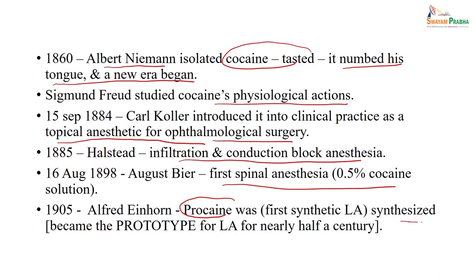Procaine was the first synthetic local anesthetic, prepared for the first time in 1905 by Alfred Einhorn. It became a prototype of all local anesthetics for nearly half a century. Starting from the alkaloid which gives numbness and euphoria, people synthesized cocaine, studied its physiological action, started using local anesthetics in the eyes for ophthalmological surgery, then developed infiltration, conduction, and spinal anesthesia, and procaine was prepared in the early 20th century.